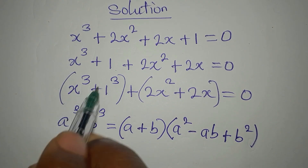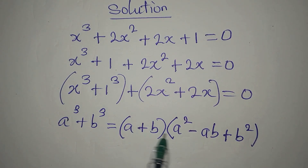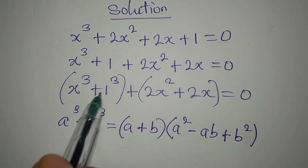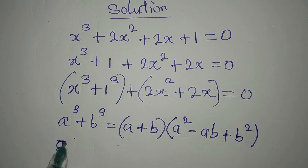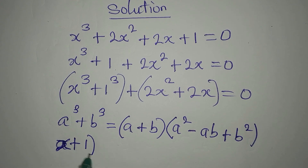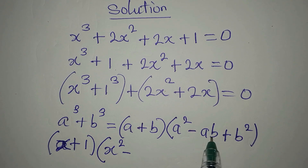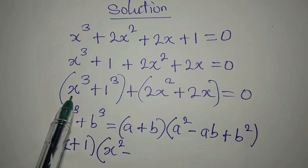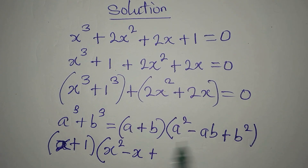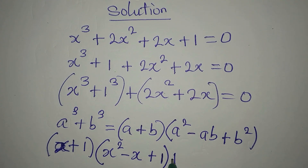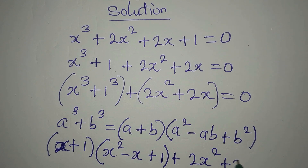So in place of this, our a is x and our b is 1. Here we write x plus 1 in the first bracket, then x squared minus ab, which is x times 1, that is x, plus b squared which is 1 squared, that is 1. Then plus we carry over 2x squared plus 2x, equal to 0.